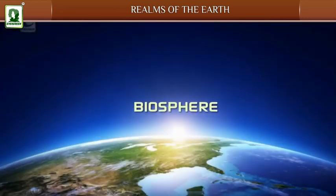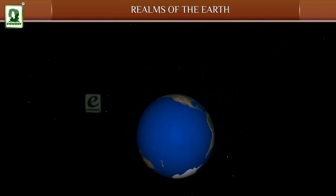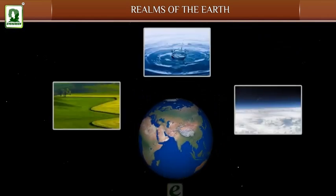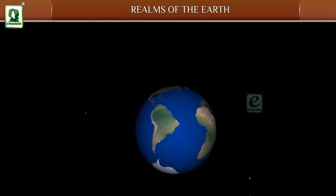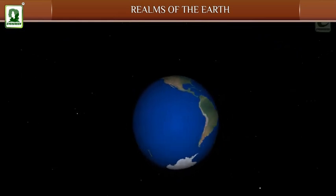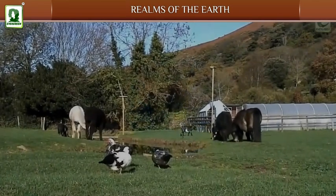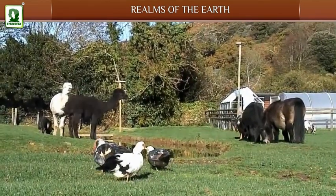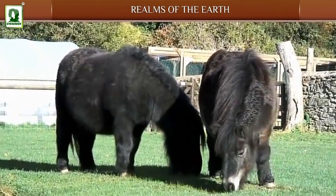Biosphere: The biosphere is that narrow zone where land, water, and air come in contact with each other. The biosphere makes earth a unique planet, as life exists only in the biosphere. Different varieties of plants and animals live in different parts of the earth depending upon the conditions in that part of the biosphere.